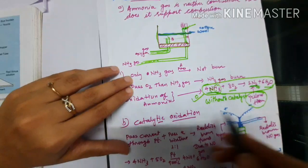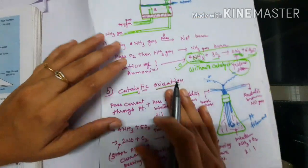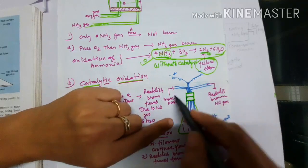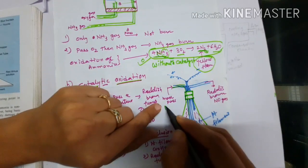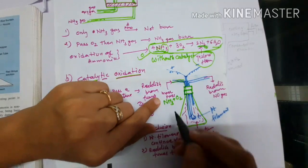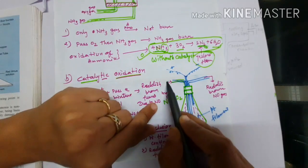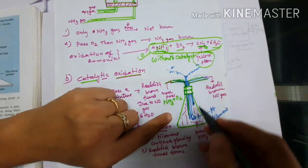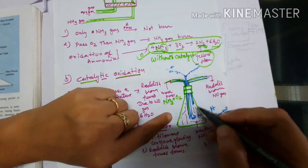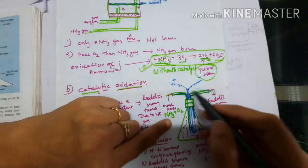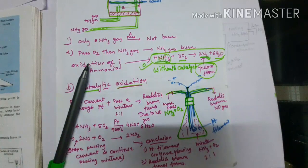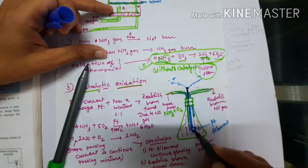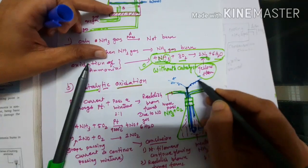Now the second oxidation reaction — that is, with a catalyst. First, let me explain the diagram. There is a conical flask, sealed at the top. There are two tubes: one tube through which the mixture of ammonia gas and oxygen gas is taken into the conical flask, and another tube through which the product gas comes out. Inside, there is a platinum wire with a filament at its end — a platinum filament — and a battery is connected to it.